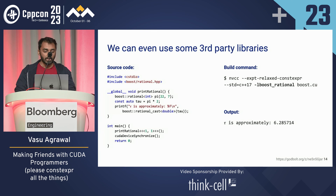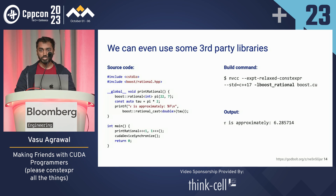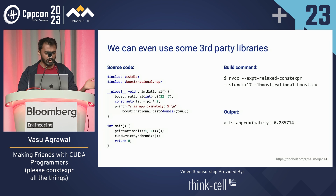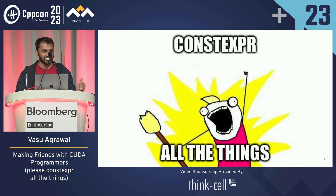We can also use third-party libraries. Here's a quick example using Boost.Rational, which has also been marked constexpr — in fact, I think since around 2011. We can see tau is approximately 6.28. So: constexpr all the things.